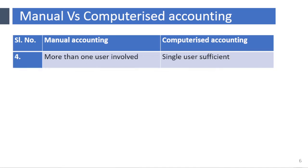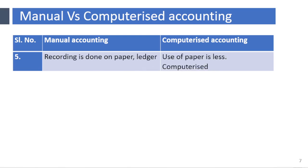More than one user is involved in manual accounting, whereas a single user is sufficient in computerized accounting. Recording is done on paper ledgers in manual accounting, whereas use of paper is less in computerized accounting — it is required only for printing the reports.